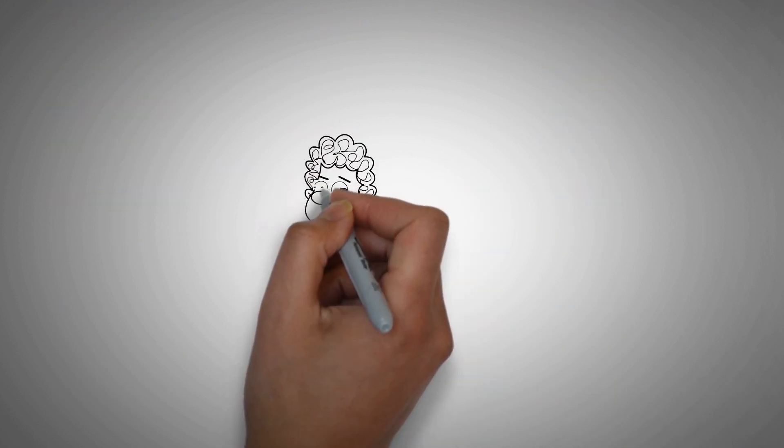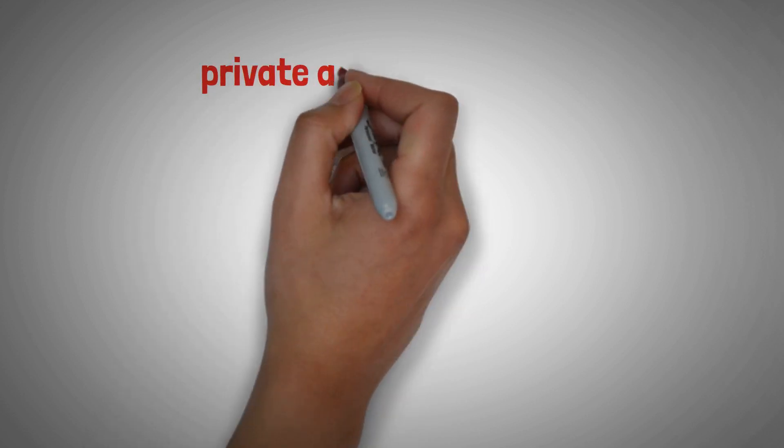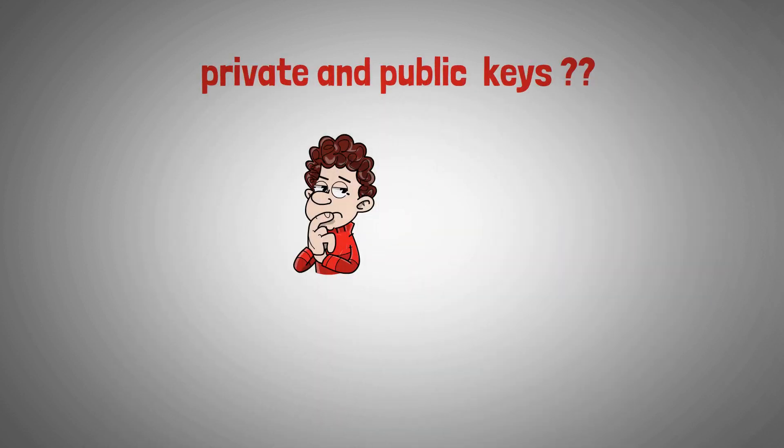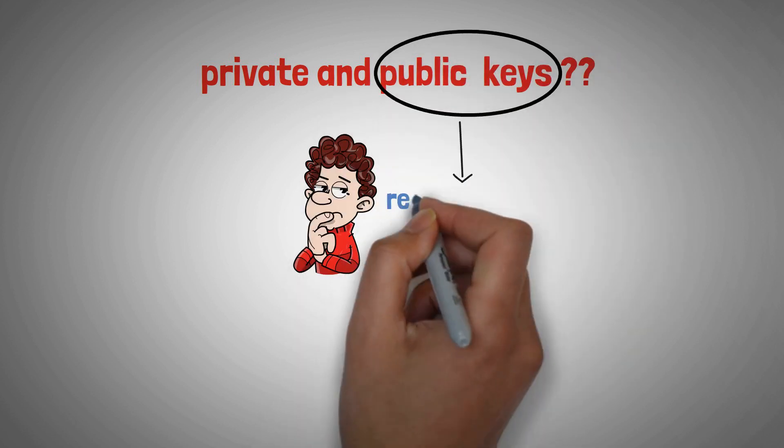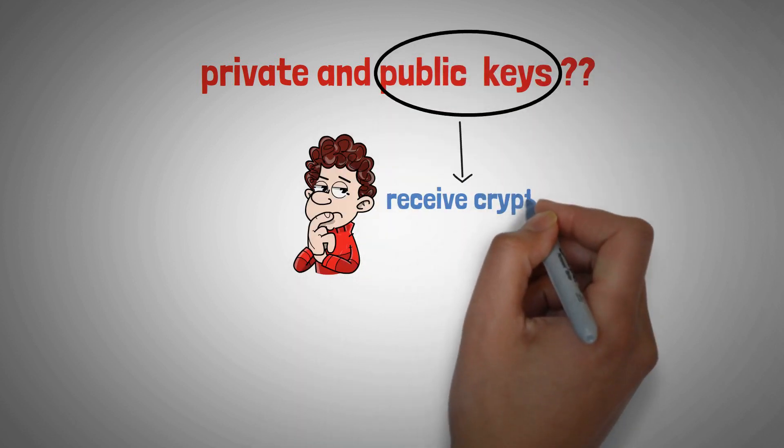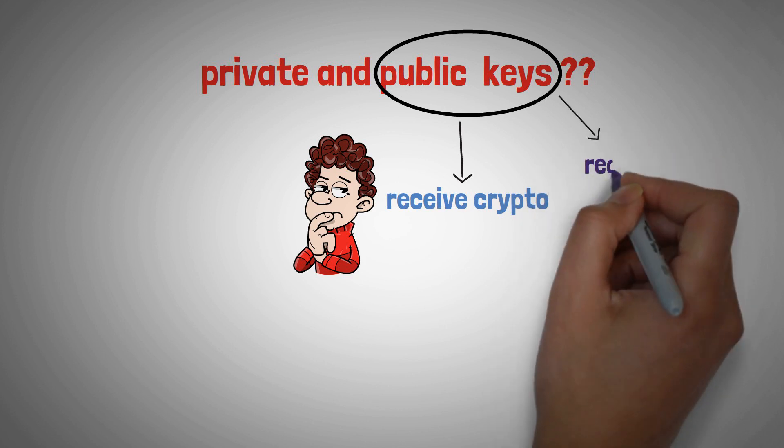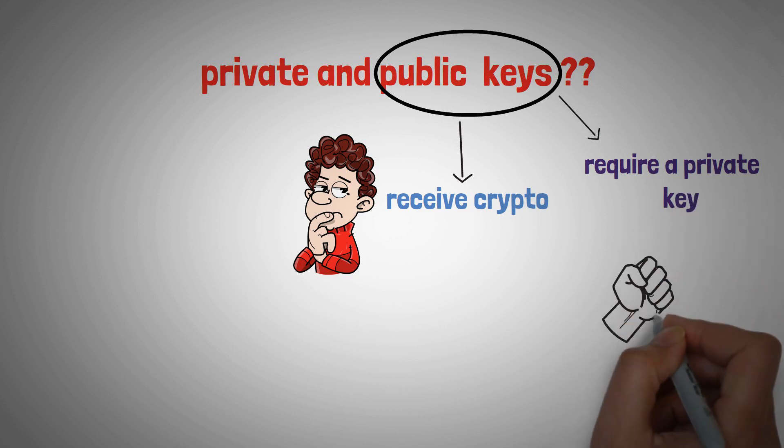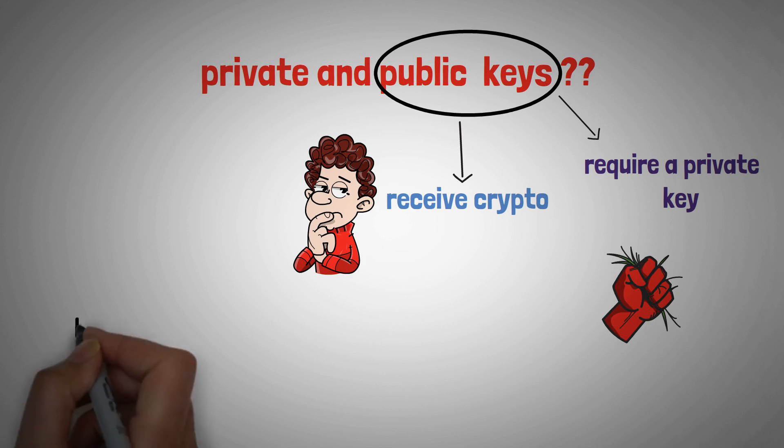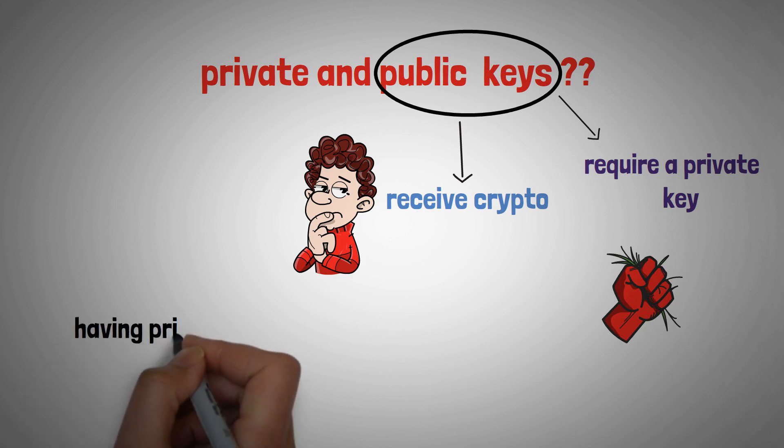So what are private and public keys and how do they work together? A public key is a cryptographic code that allows users to receive cryptocurrencies into their account. A public key requires a private key to ensure the security of the data. The private key should only be possessed by its owner and serves as the user's digital identification.